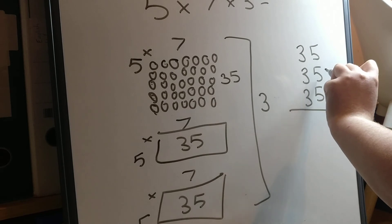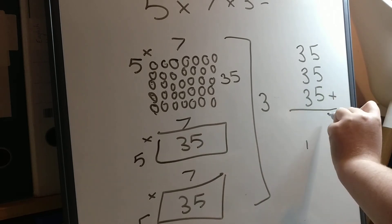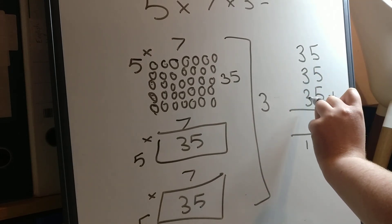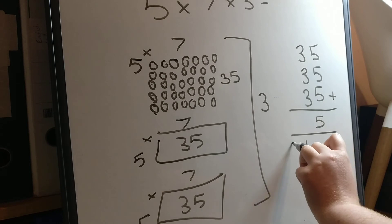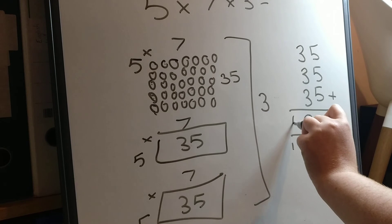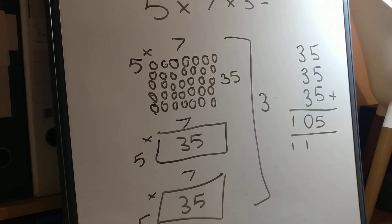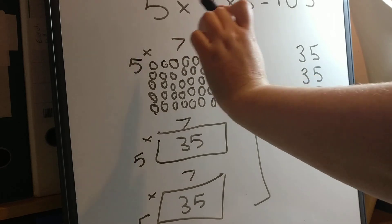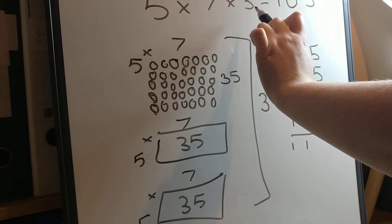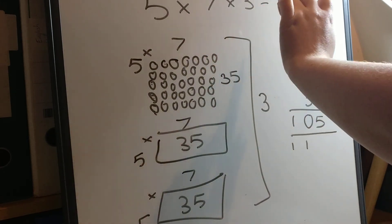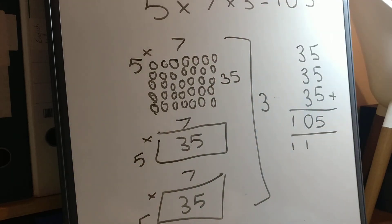5, add 5, 10, add 5, 15. 3, add 3, 6, add 3, 9, add 1, 10. And then we don't have anything in the hundreds column to add. So we've just got this one that we carried over. So I've got the answer, 105. So 5 times 7 times 3 is 105. 5 multiplied by 7 multiplied by 3 is equal to 105.